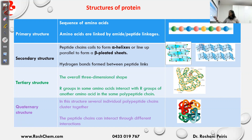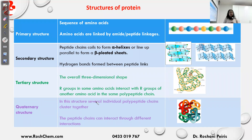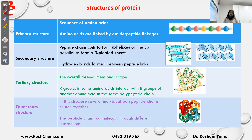Finally, the quaternary structure. In this structure, several individual polypeptide chains cluster together. In primary, secondary, and tertiary structures, we are talking about one polypeptide chain. But in the quaternary structure, several polypeptide chains interact to give a final 3D shape to the protein. Again, in quaternary structure, the peptide chains can interact through different types of interactions like dispersion forces, dipole-dipole, and hydrogen bonding.